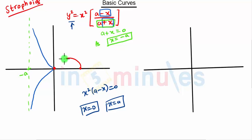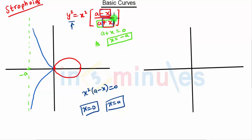As I told you, whenever we have two points on the x-axis it forms a loop. This loop is our strophoid curve. Remember: when we have minus x in the numerator and plus x in the denominator, the loop is on the positive side of the x-axis and the asymptote is on the negative side.